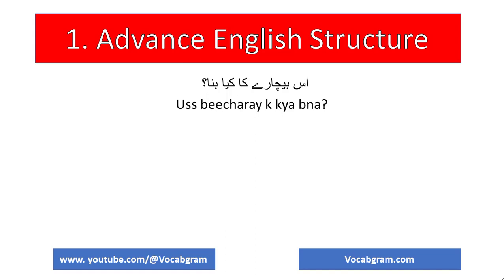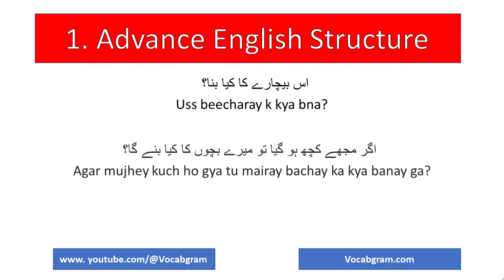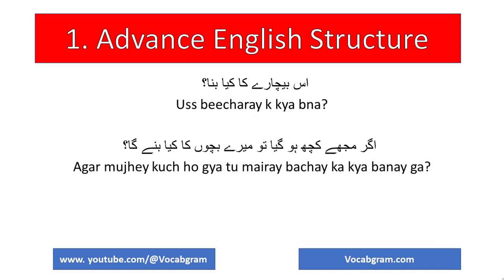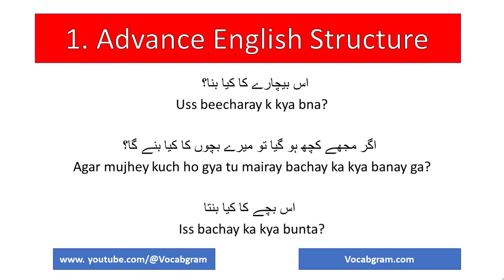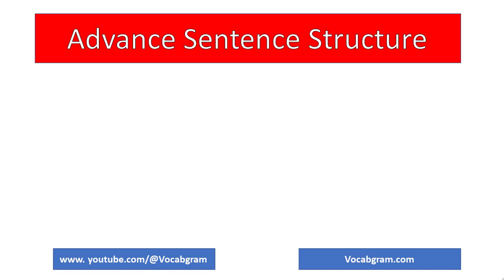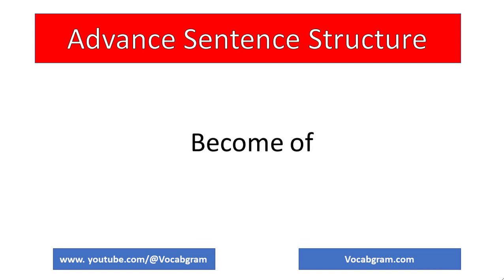This type of sentence we can say: 'What do you think of that?' or 'If something happened to me, what will my child be?' or 'What will this child be?' These types of sentences — how can we make them in English?